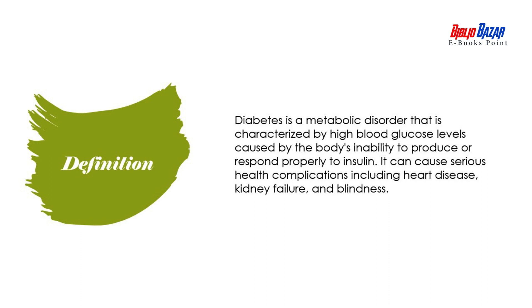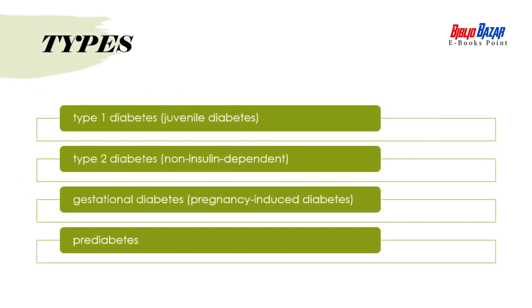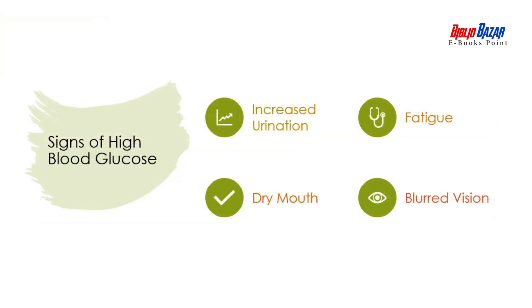It is a serious disease that can cause many health complications such as heart disease, kidney failure, and even blindness. Now that we know what diabetes mellitus is, let's talk about the different types. There are three main types: type 1 diabetes or juvenile diabetes, type 2 diabetes or non-insulin dependent diabetes, and gestational diabetes or pregnancy-induced diabetes, as well as pre-diabetes.